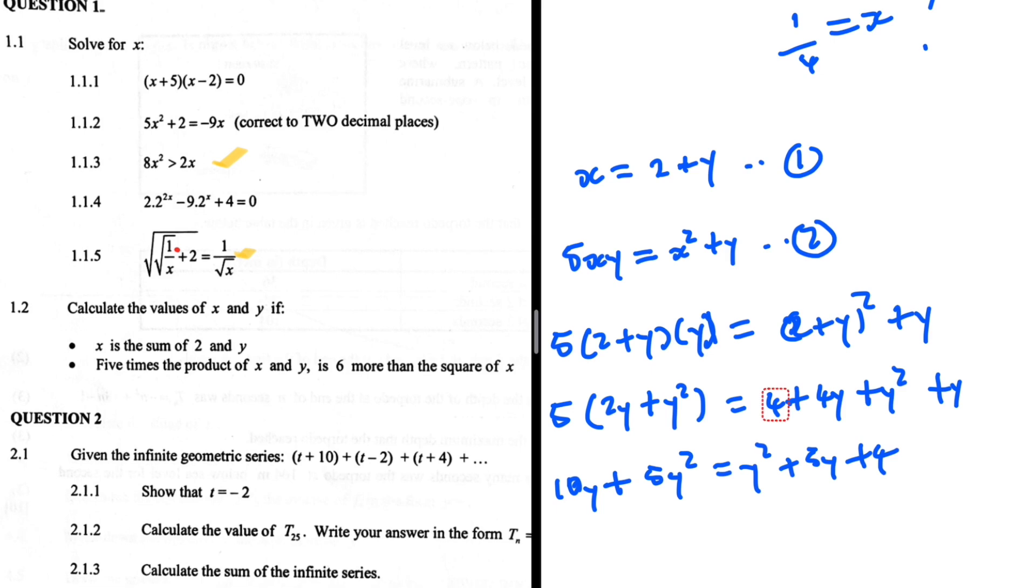5y squared minus y squared is 4y squared, and 10y minus 5y is plus 5y, minus 4 equals 0.